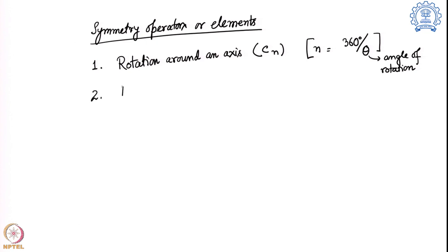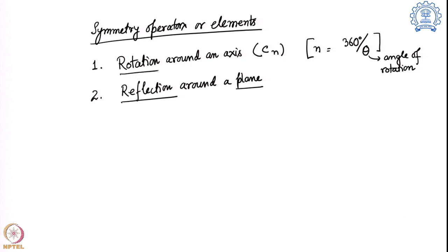The next symmetry element is reflection around a plane. Here, reflection is the operation and the plane is the element — just as rotation was the operation and the axis was the geometric entity previously. This is given the symbol sigma, which can have three different forms: σh, σv, and σd.